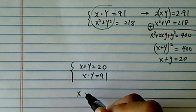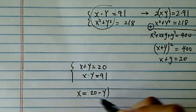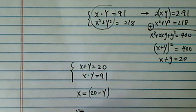Okay, so what I'm going to do is I'm going to solve for x. X is 20 minus y, and then I'll substitute back in there so I have, I don't have x anymore, so I have 20 minus y times y is equal to 91.